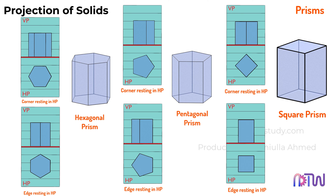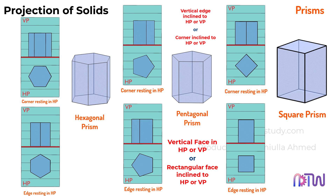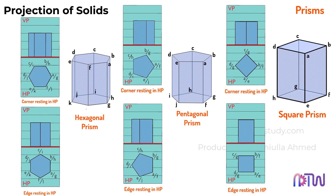Moreover, if the question specifies a vertical face in HP or VP, or a rectangular face inclined to HP or VP, we will illustrate the top views of the shapes in this orientation for their respective solids. Alternatively, if the question mentions the prism with a vertical edge inclined to HP or VP, or a corner inclined to HP or VP, then we will draw the top views of the respective shapes in these orientations. One additional point to note here is the naming convention. In this case, the corners are labeled as AE because the corners of the top and bottom bases of the prisms overlap, resulting in the corners also overlapping. To grasp the terminology used in solids, you can watch the first video on the projection of solids, which will give you a clear understanding.